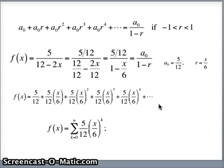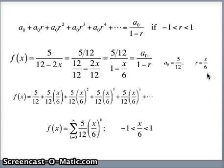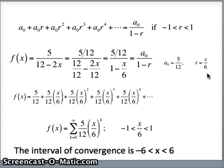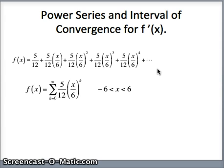Now where does this converge? We know that a geometric series converges if r is between negative 1 and positive 1. So this will converge if x/6 is between negative 1 and positive 1, which means multiplying by 6, the interval of convergence is from negative 6 to 6. With the geometric series test we do not need to check endpoints, because if r equals 1 or negative 1 the geometric series diverges. So the interval of convergence is negative 6 to 6.